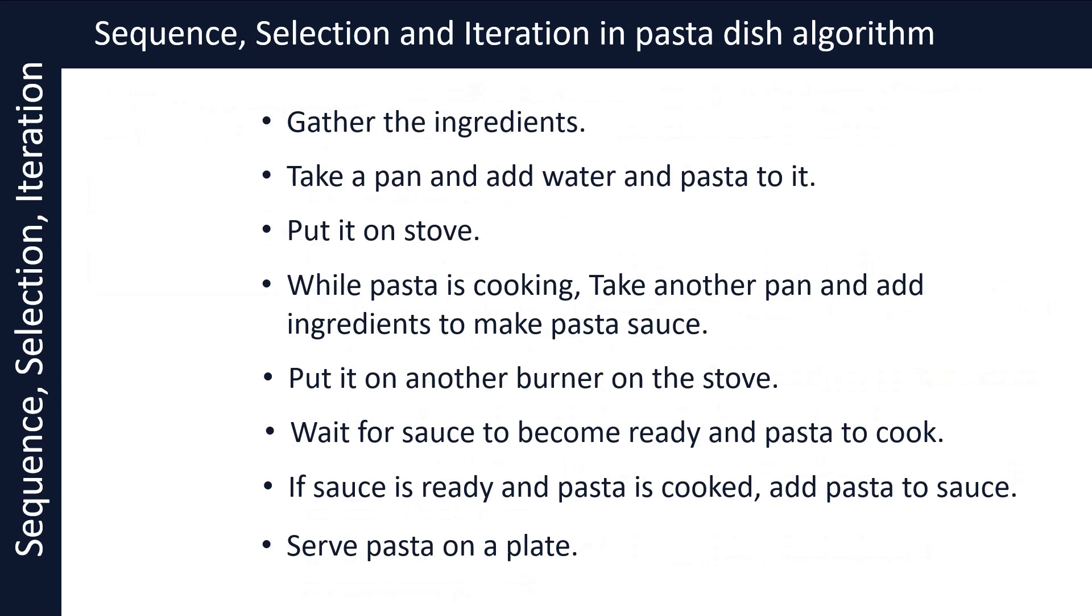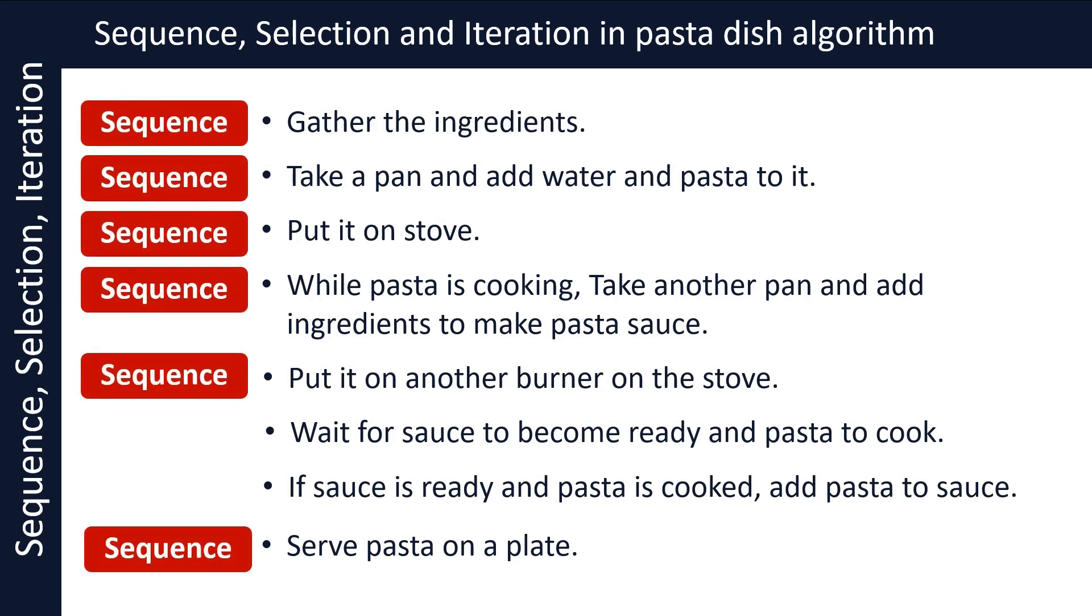Gather ingredients, take a pan and add water and pasta to it, put it on the stove, while pasta is cooking take another pan and add ingredients to make pasta sauce, put it on another burner on the stove, and serve pasta on a plate are all examples of sequence. Here we are following these steps in a particular order, and only by following this order we will be able to make our pasta dish.